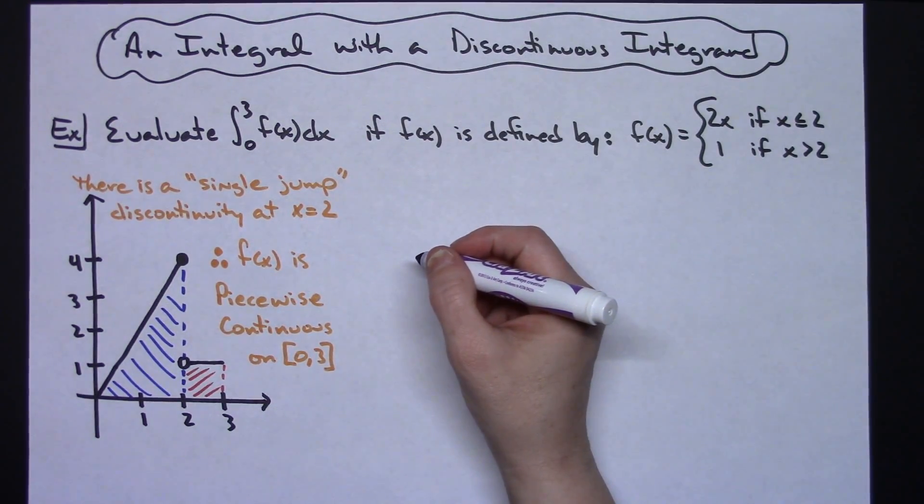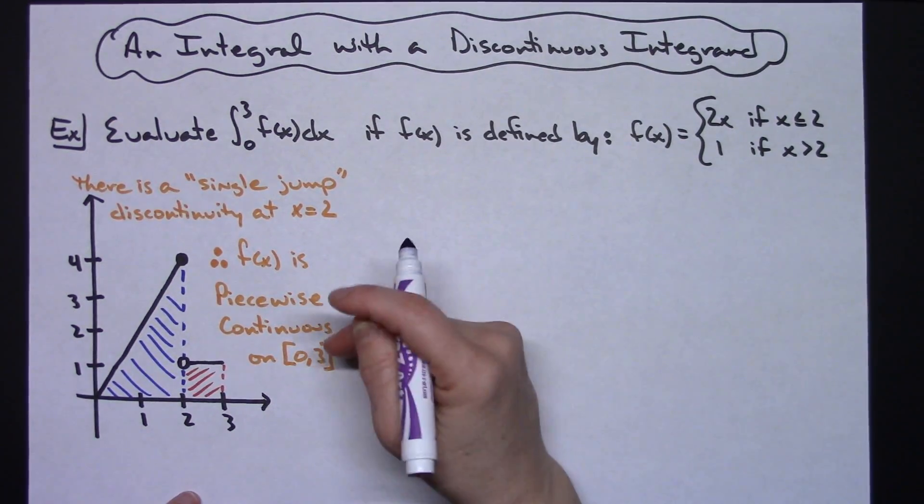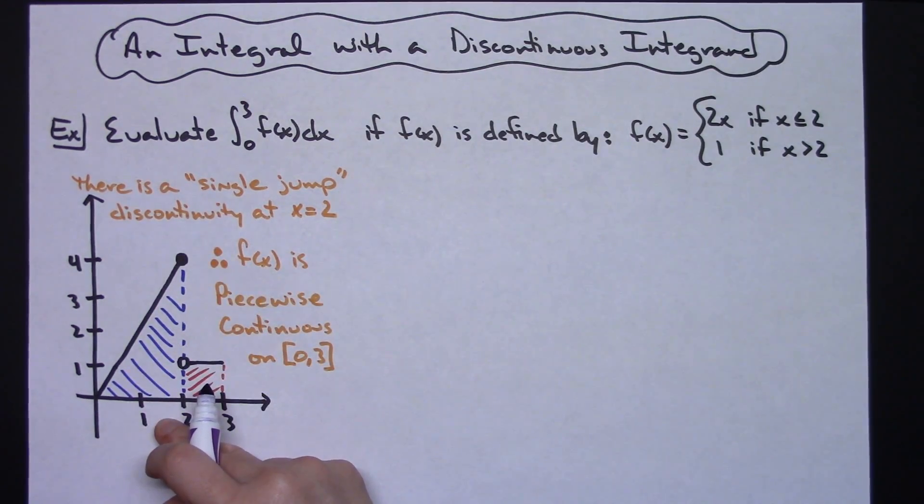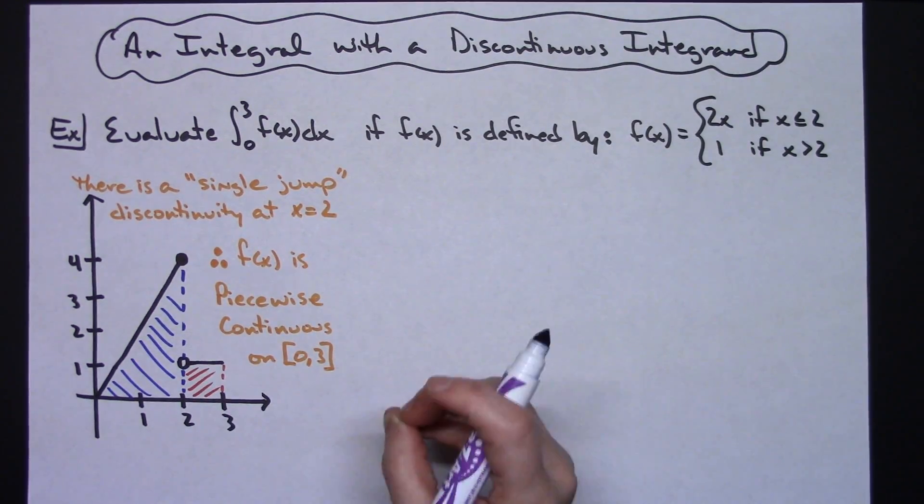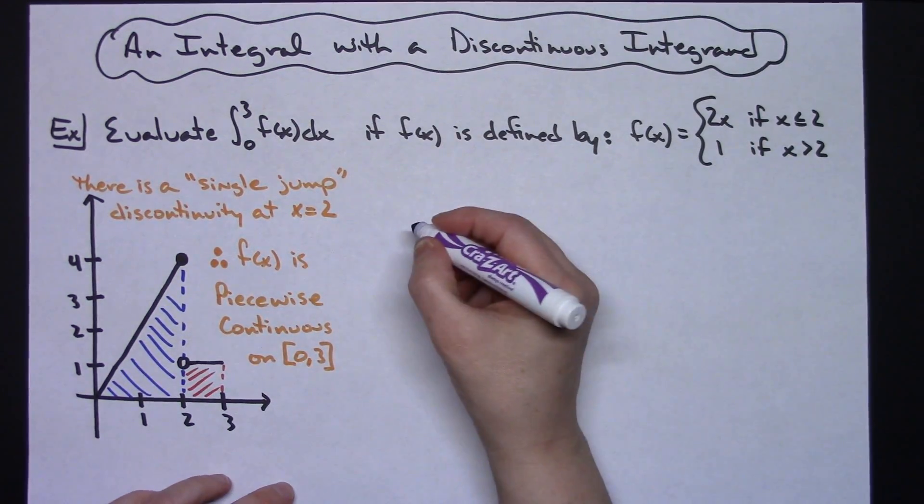So the basis for being able to integrate this is because of this single jump discontinuity, which then allows us to say that f of x is piecewise continuous on this interval.